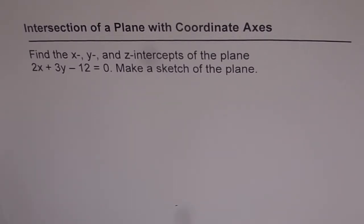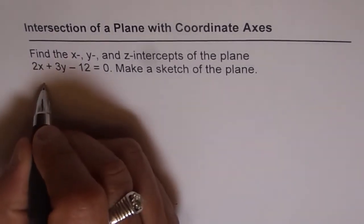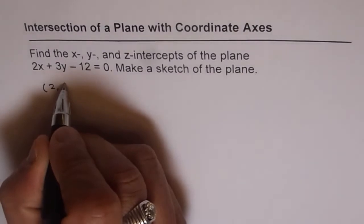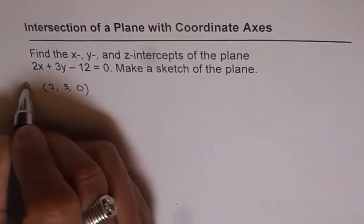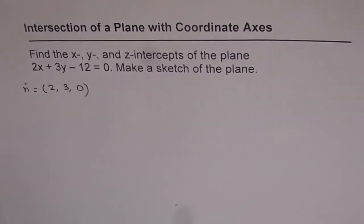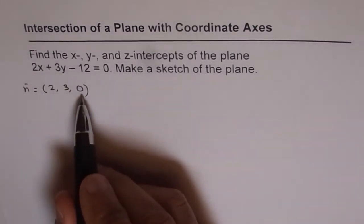Now you will observe that the normal to the plane is (2, 3, 0). In this case there is no component of normal to the plane in the z-direction, and therefore the plane is actually parallel to the z-axis.